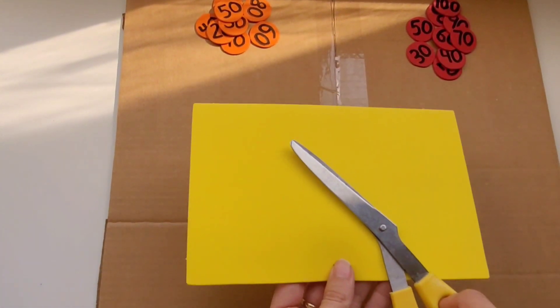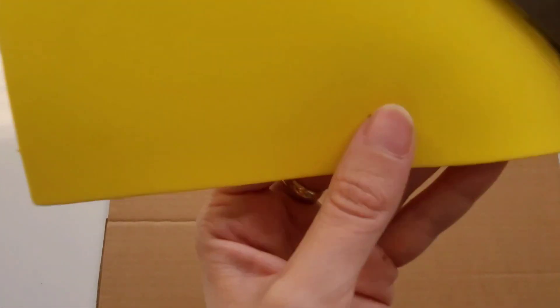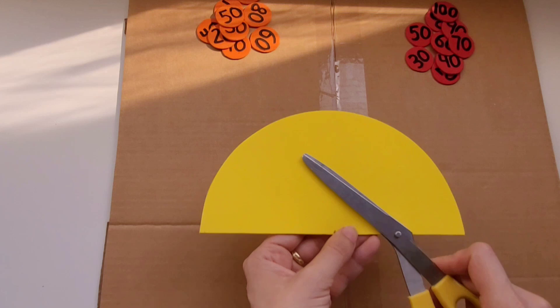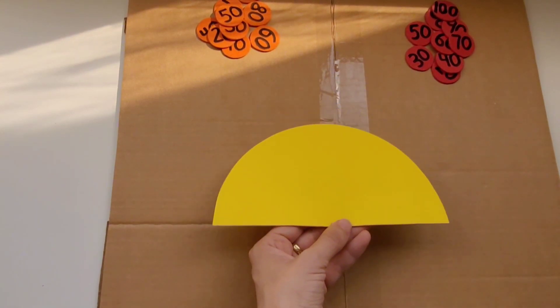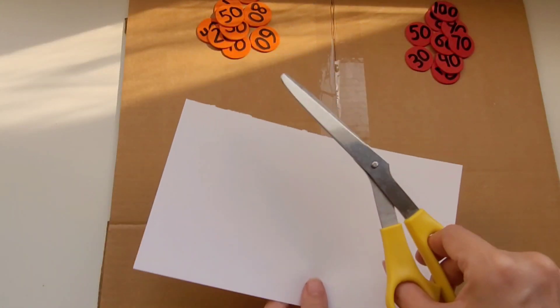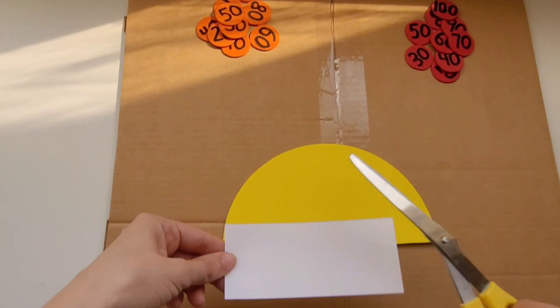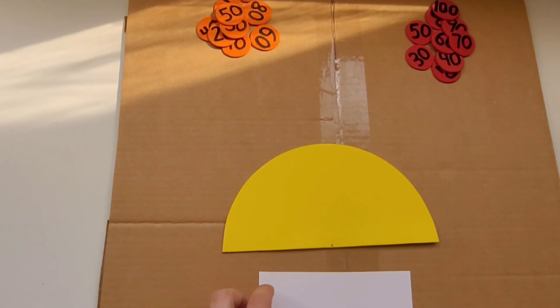Next I'm going to get this piece of yellow foam and I'm going to cut it into half a circle. Next I'm going to use a piece of white paper which I will cut into a rectangle. This rectangle is going to be our whiteboard working space.